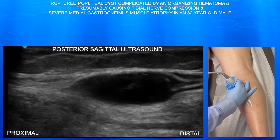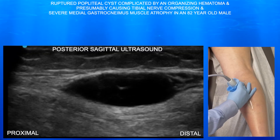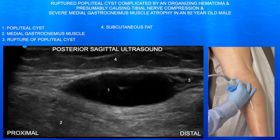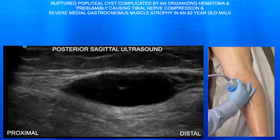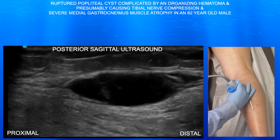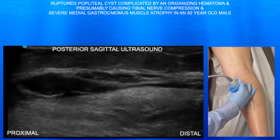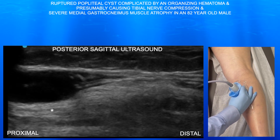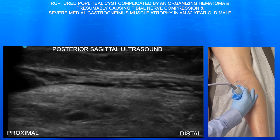Here we're looking at this popliteal cyst in a sagittal plane. You can appreciate that there is a rupture of this cyst at its most distal pole. You can see the fluid tracking essentially in the subcutaneous tissue and subcutaneous fascia. It's lying right over the medial gastrocnemius muscle, which is hyperechoic, consistent with atrophy.